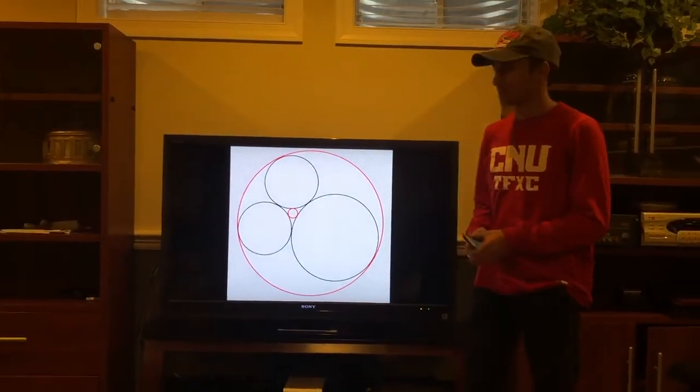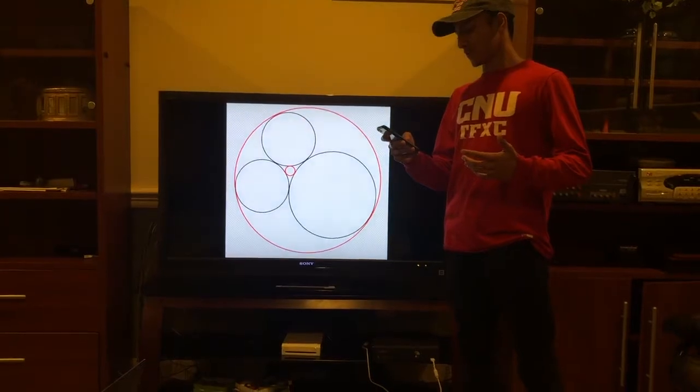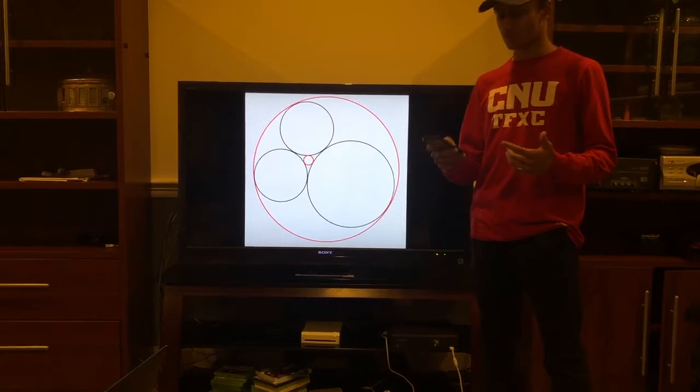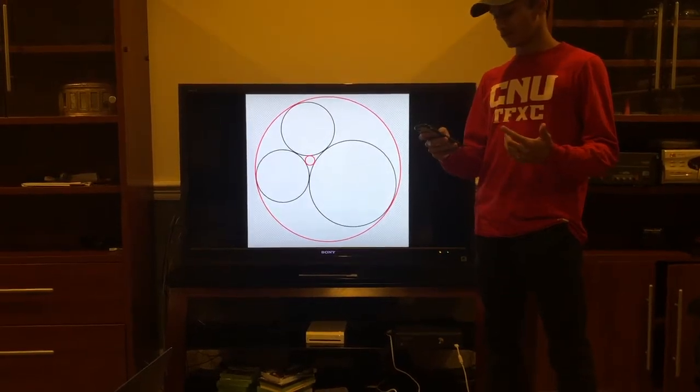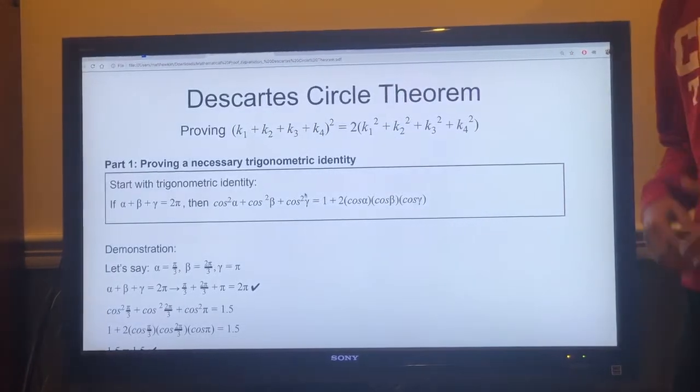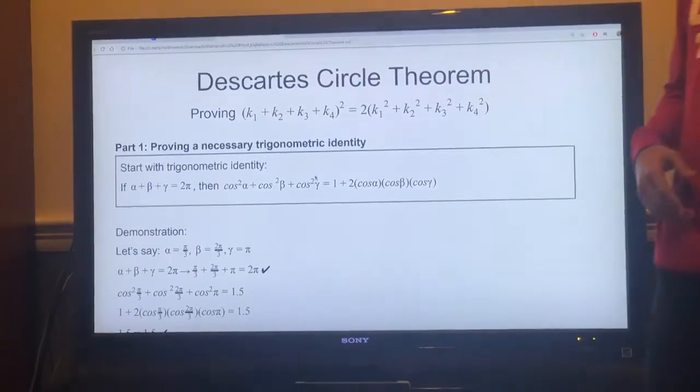What up, my rock stars? So basically, Descartes' Circle Theorem proves that for every four kissing mutually tangent circles, there is a quadratic equation that can be solved to find a fourth circle tangent to the three given. So before we start proving the circle theorem itself, we have to prove a necessary trigonometric identity.